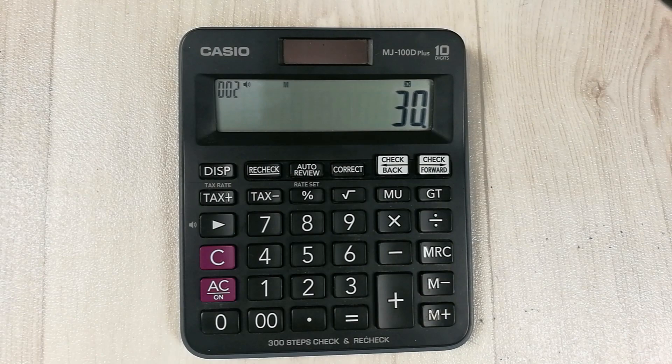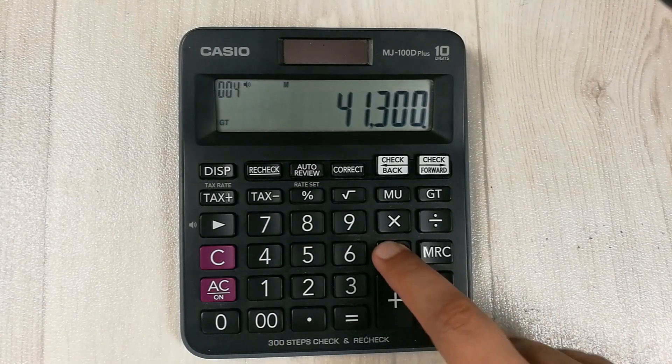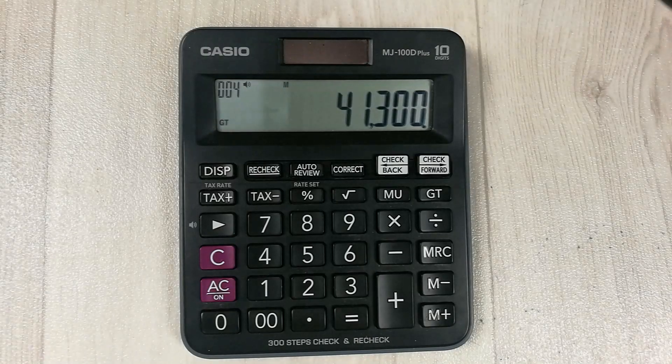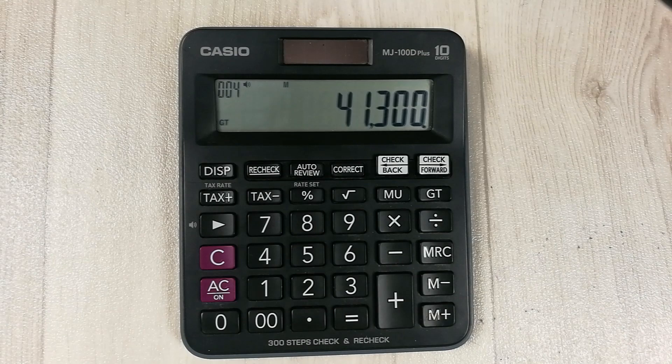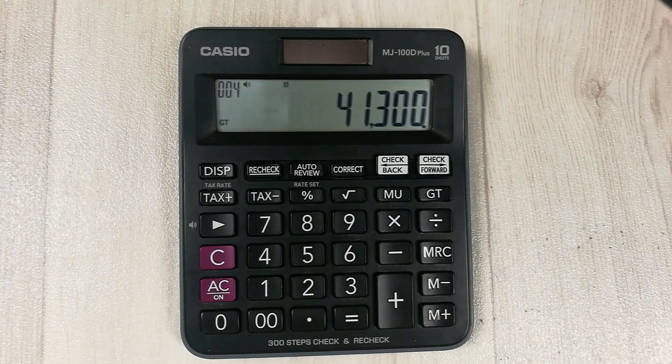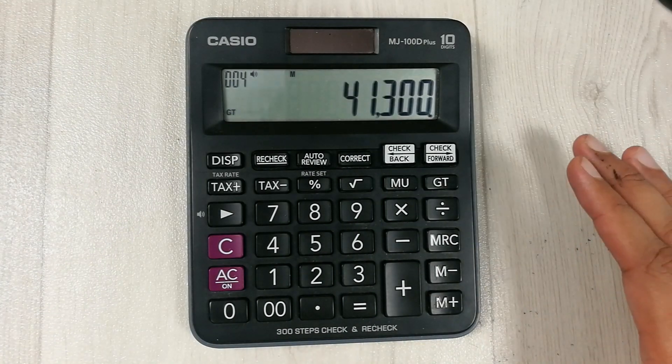So guys, here is the final answer. 41,300 is the 30% off price from 59,000. So guys, this is how you can calculate a 30% off a price in calculator.